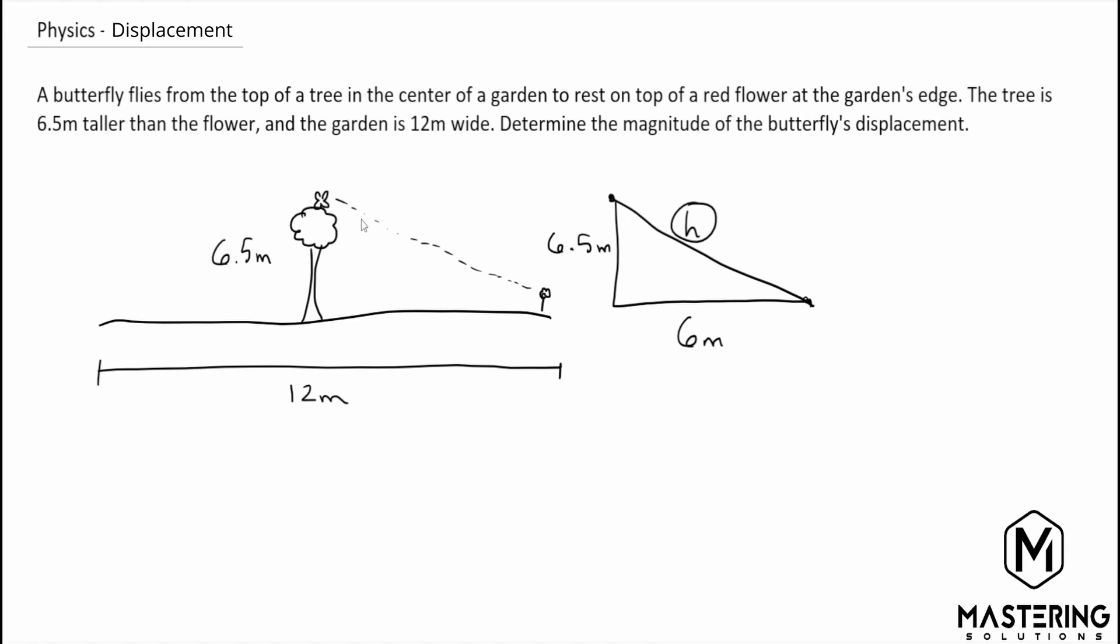Now a point with displacement is it doesn't matter if the butterfly does a little loop-de-loop and flies all over the place because it eventually will end up on the flower and all they want to know was where it started to where it stopped. That is displacement. So the distance from here a straight line down to here.